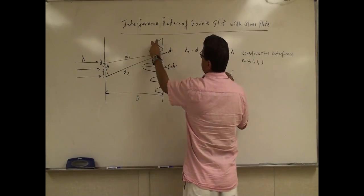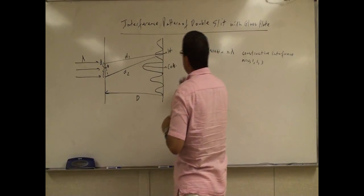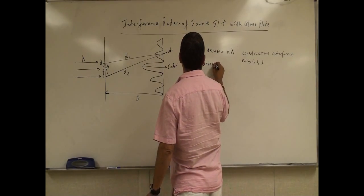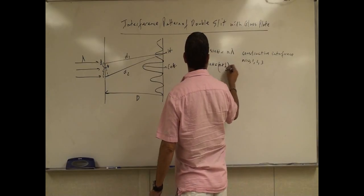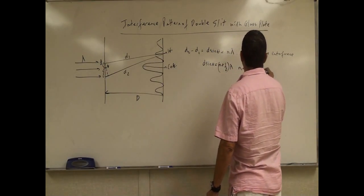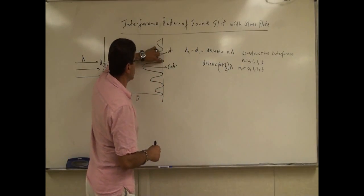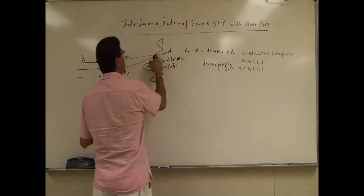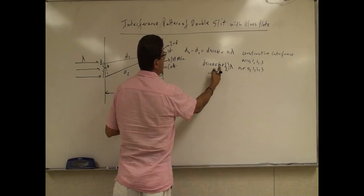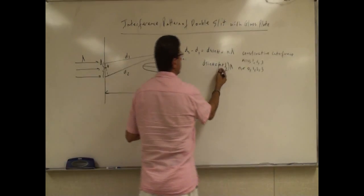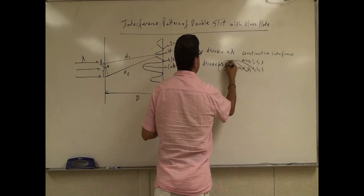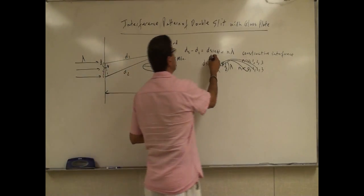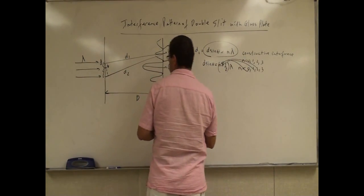If I want to know the location of the first minimum, then I say d sine theta is equal to n plus a half times lambda, where n equals 0, 1, 2, 3. So the first minimum will occur before the first maximum. Then you have first maximum, then second minimum. So n equals 0 for the first minimum, 1 for the second minimum, 2 for the third minimum, and so on.